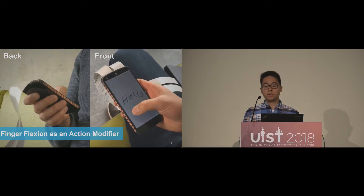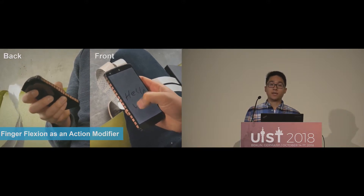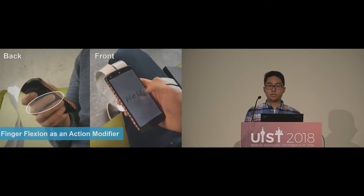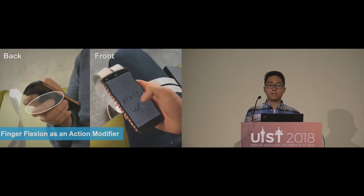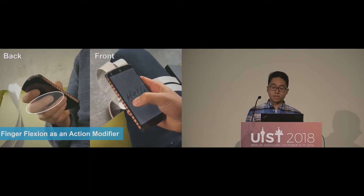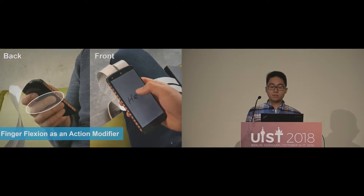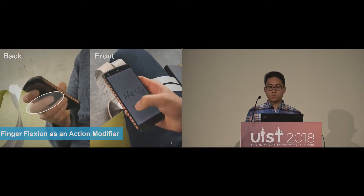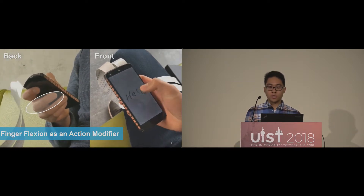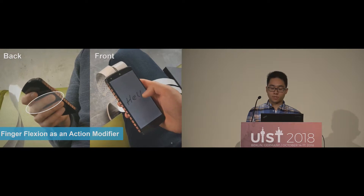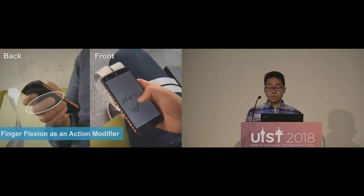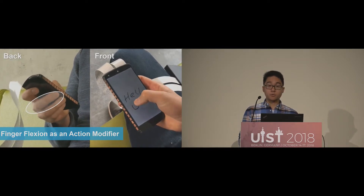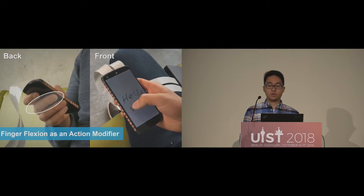Another use case we implemented uses the deflection state of the middle finger as an action modifier. In this example, users can draw in a painting application when the middle finger on the backside is stretched. But when bending the middle finger, the eraser is activated without the need to select it on the user interface. The concept of finger flexion works similar to how modifier keys on a keyboard work, and augments the touch input on the front screen, introducing new input dimensions for mode switching, 3D navigation, or shortcuts.